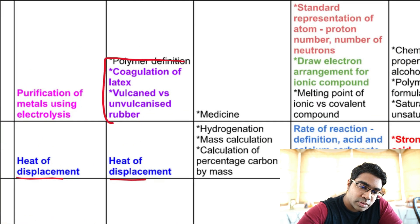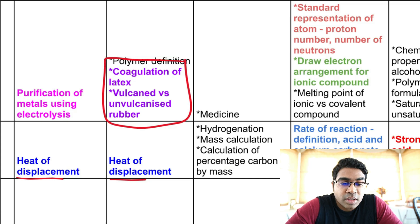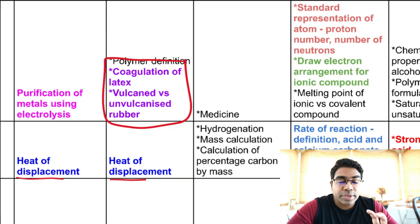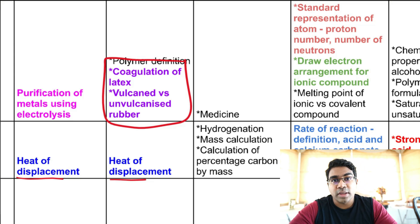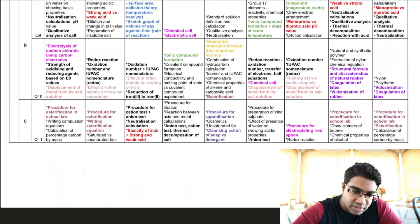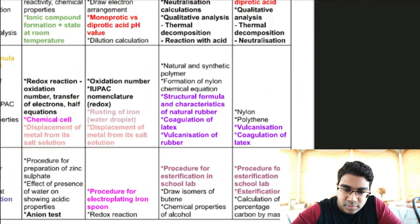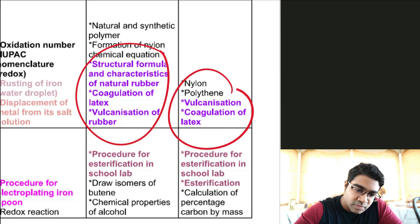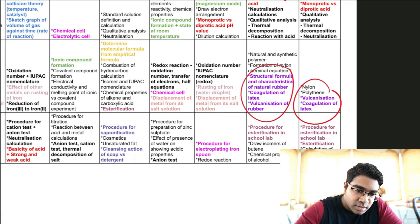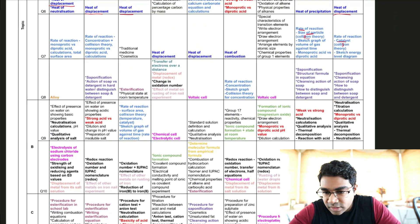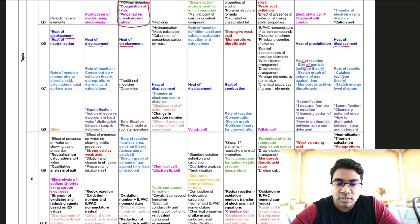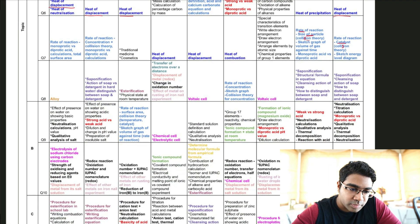One more constantly recurring topic is coagulation of latex and vulcanized versus un-vulcanized rubber. These are worth a lot of marks — coagulation of latex can go up to eight marks. So it's really worth looking into and preparing for, because if it comes out you will really benefit if you are prepared for it.